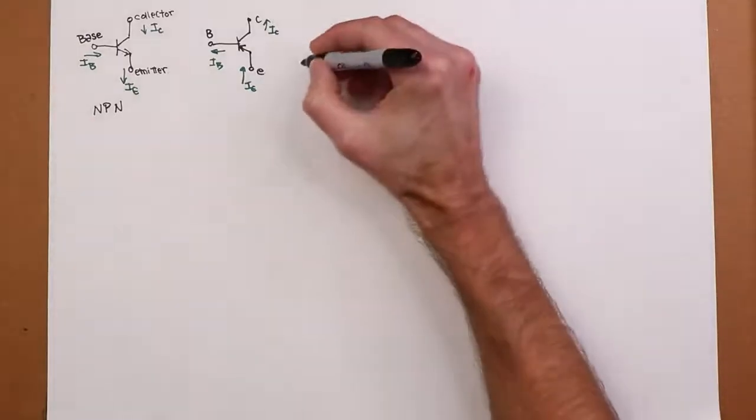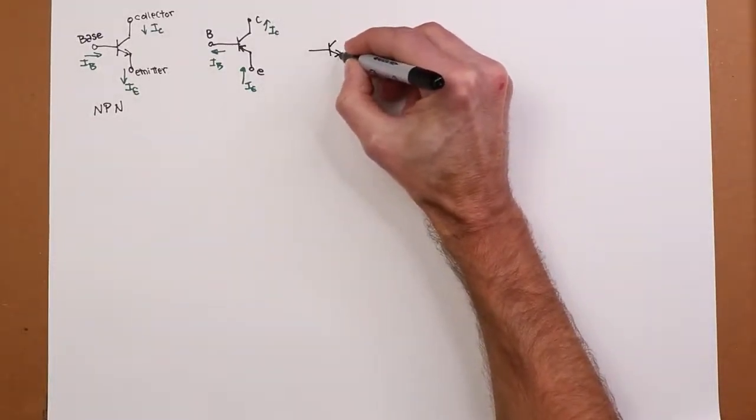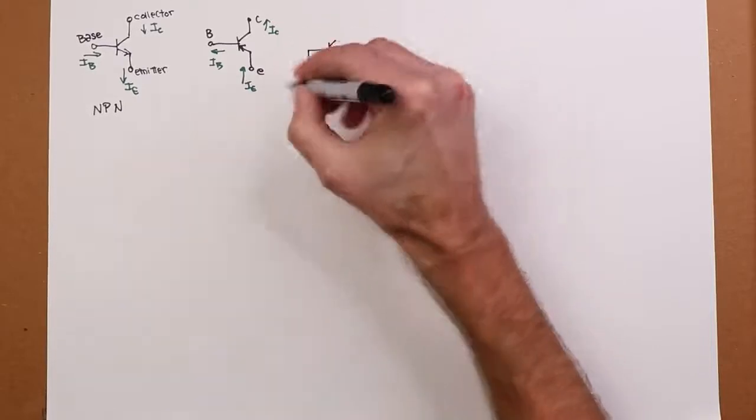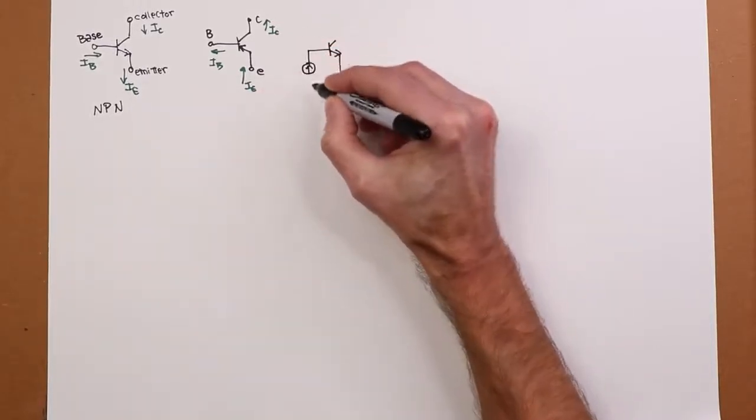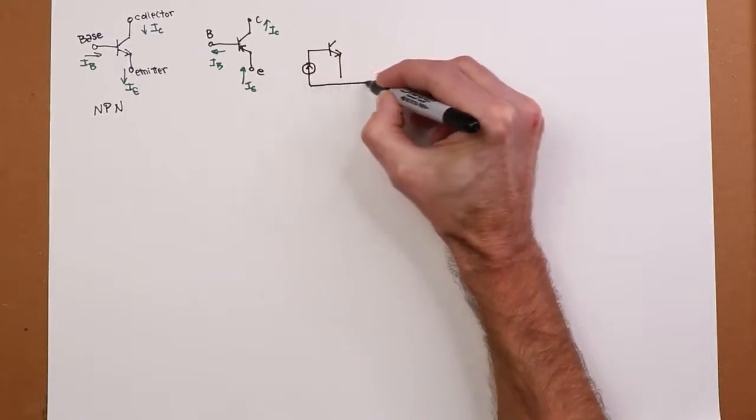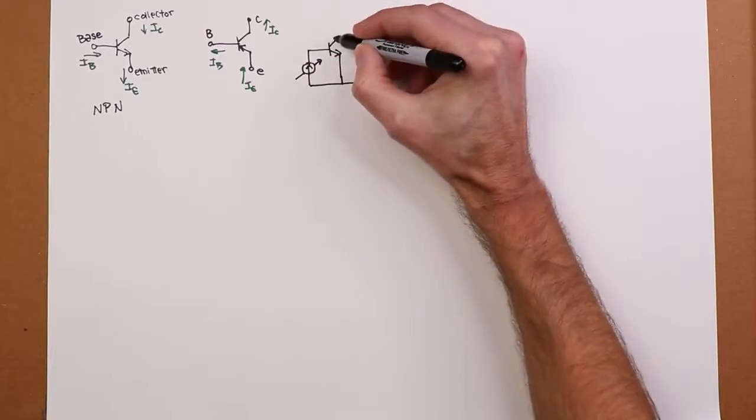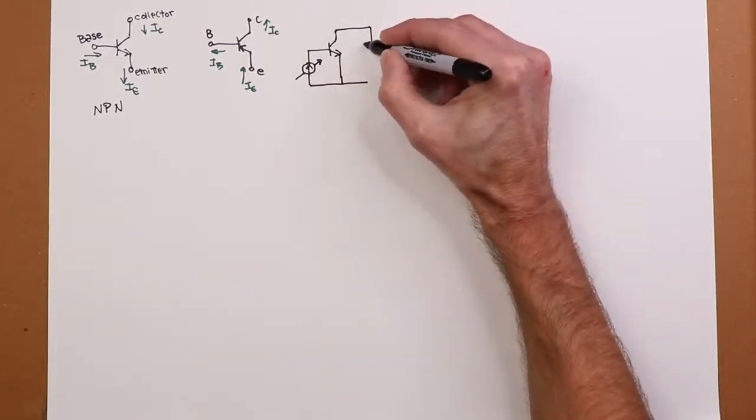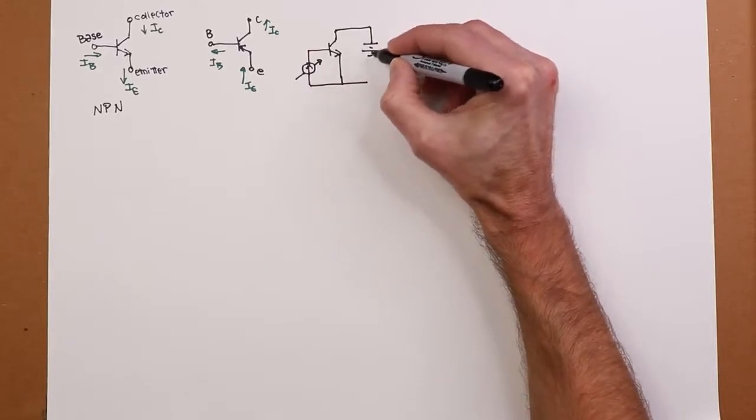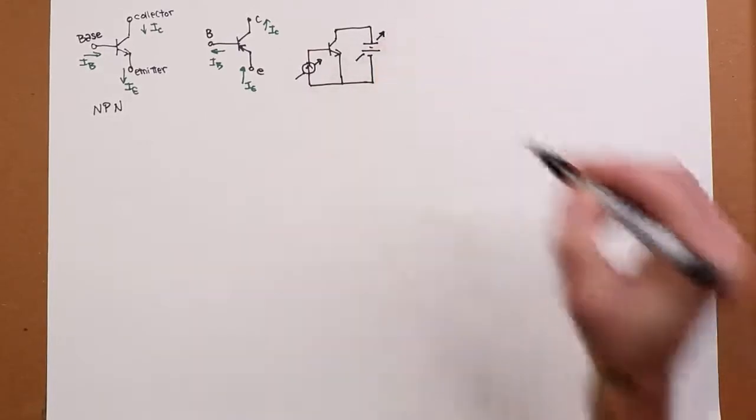What do we see with this? Well, essentially what we're going to do is we're going to take our transistor, and I'm just going to use an NPN here. And on the base end, we're going to hook up a current source. That's going to be an adjustable current source. And then on the collector to emitter, we're going to put in a power supply, DC power supply. And that will also be variable.